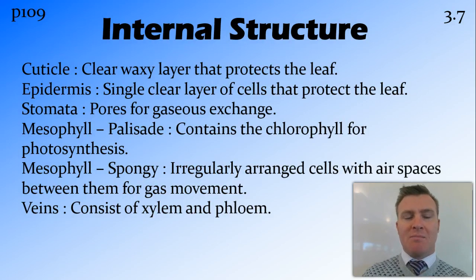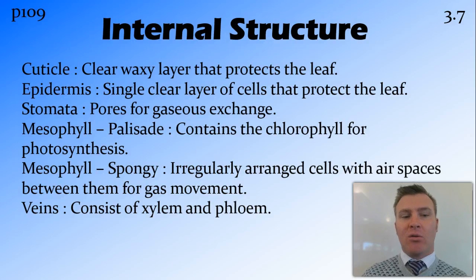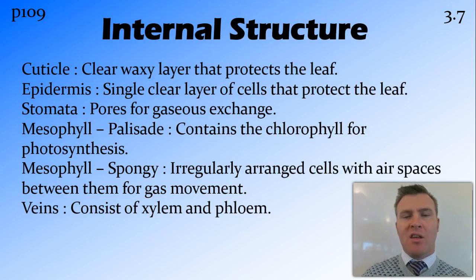Stomata are pores that allow gaseous exchange, so carbon dioxide to come in and out. We have palisade mesophyll cells — mesophyll just means cells inside. The palisade cells are the ones that contain the chlorophyll and they're found at the top of the leaf underneath the upper epidermis. The spongy mesophyll is found on the bottom side of the leaf and the cells are irregularly arranged so that they have a whole heap of air spaces between them, making them a bit spongy. This allows gas movement from the stomata up to the palisade cells where photosynthesis takes place.